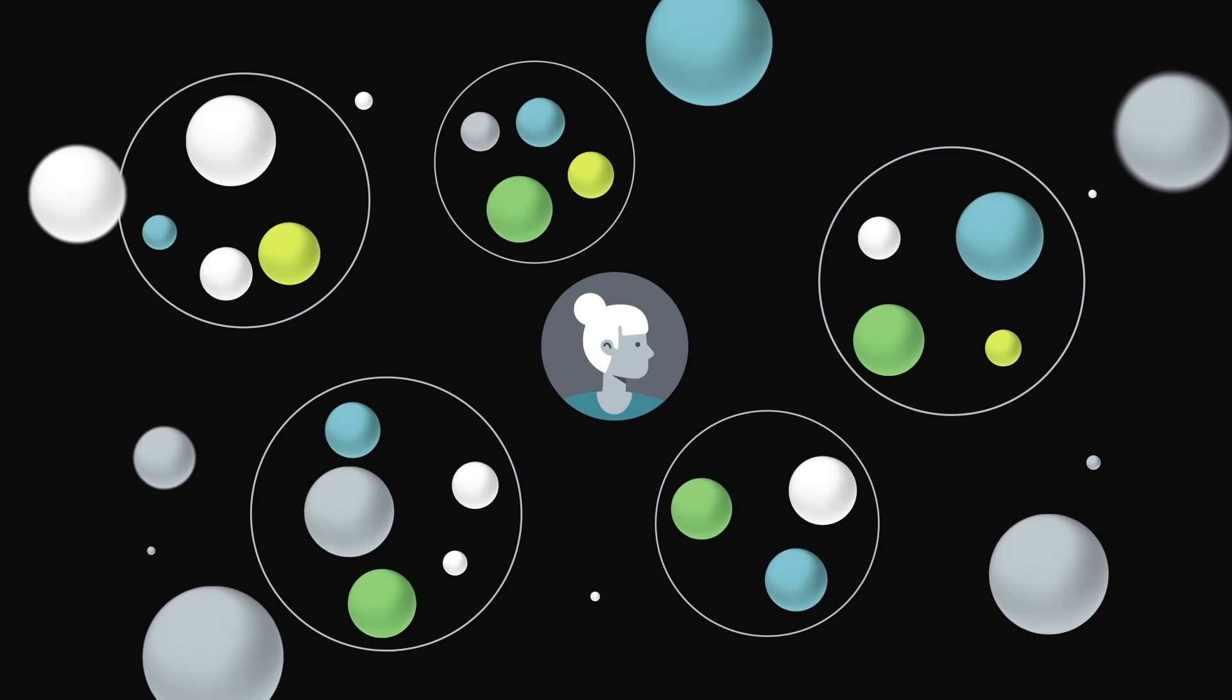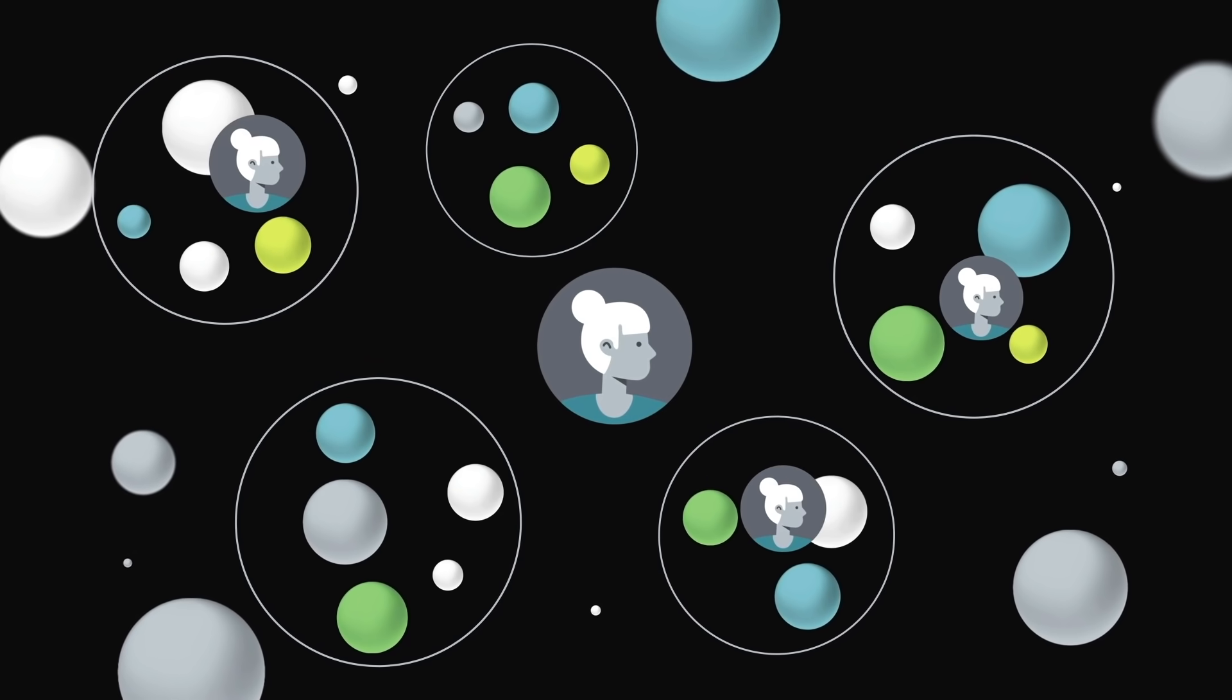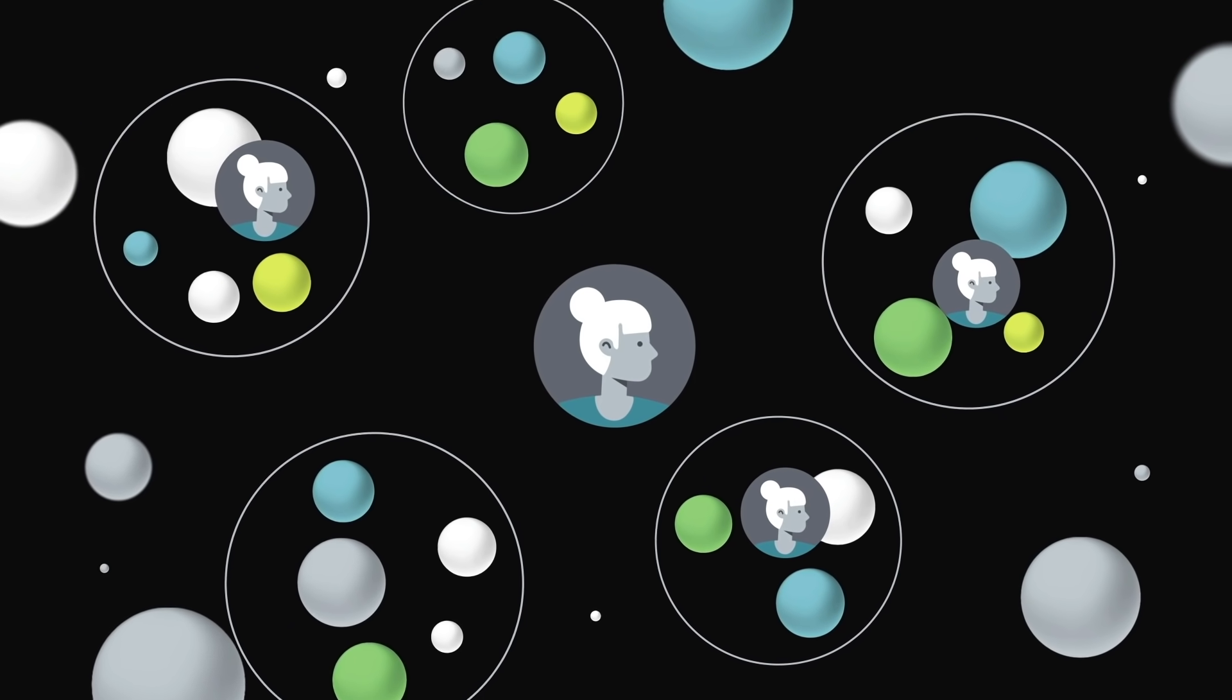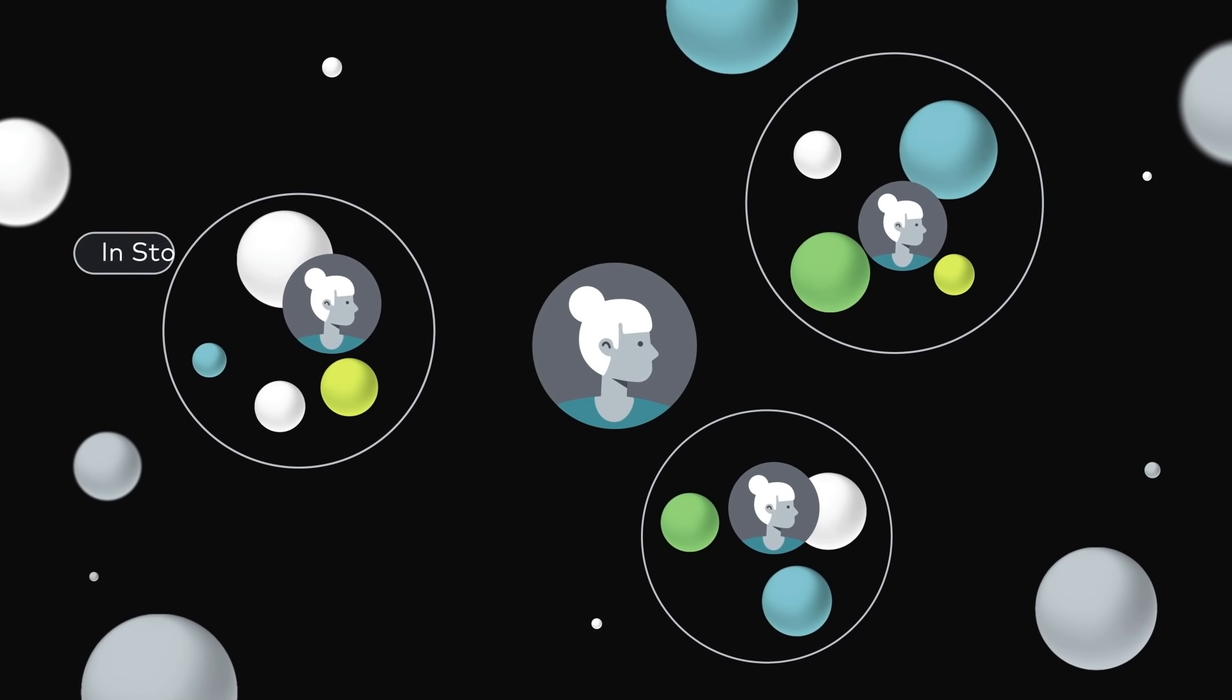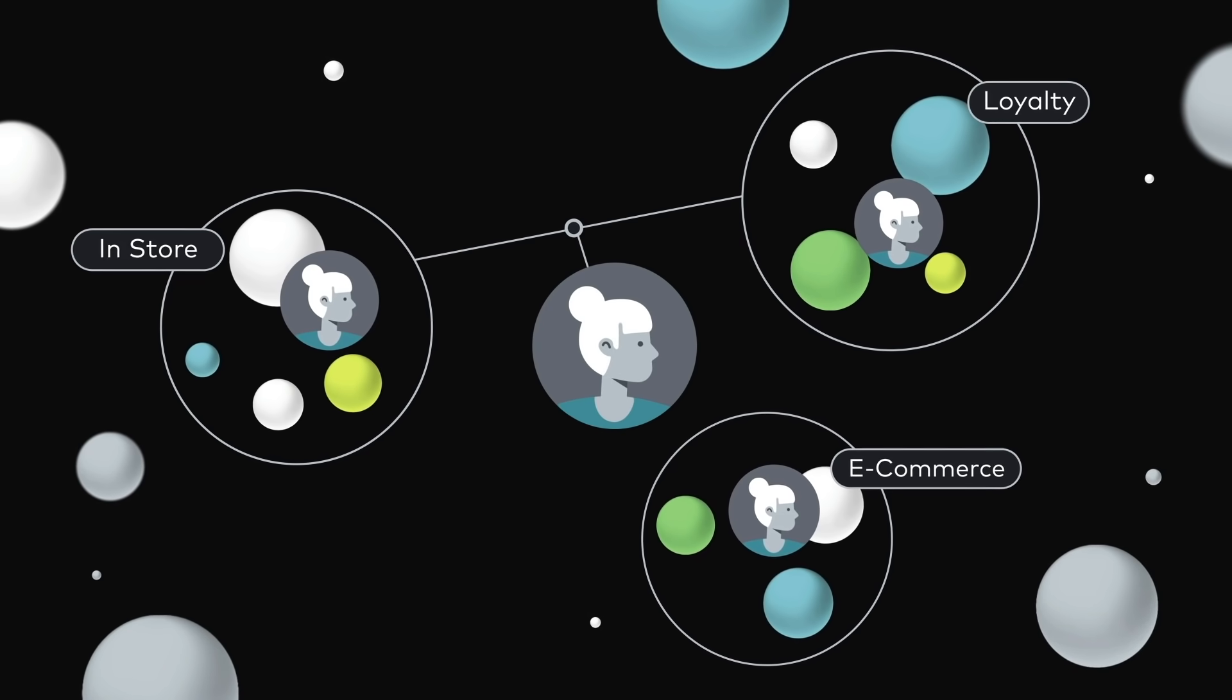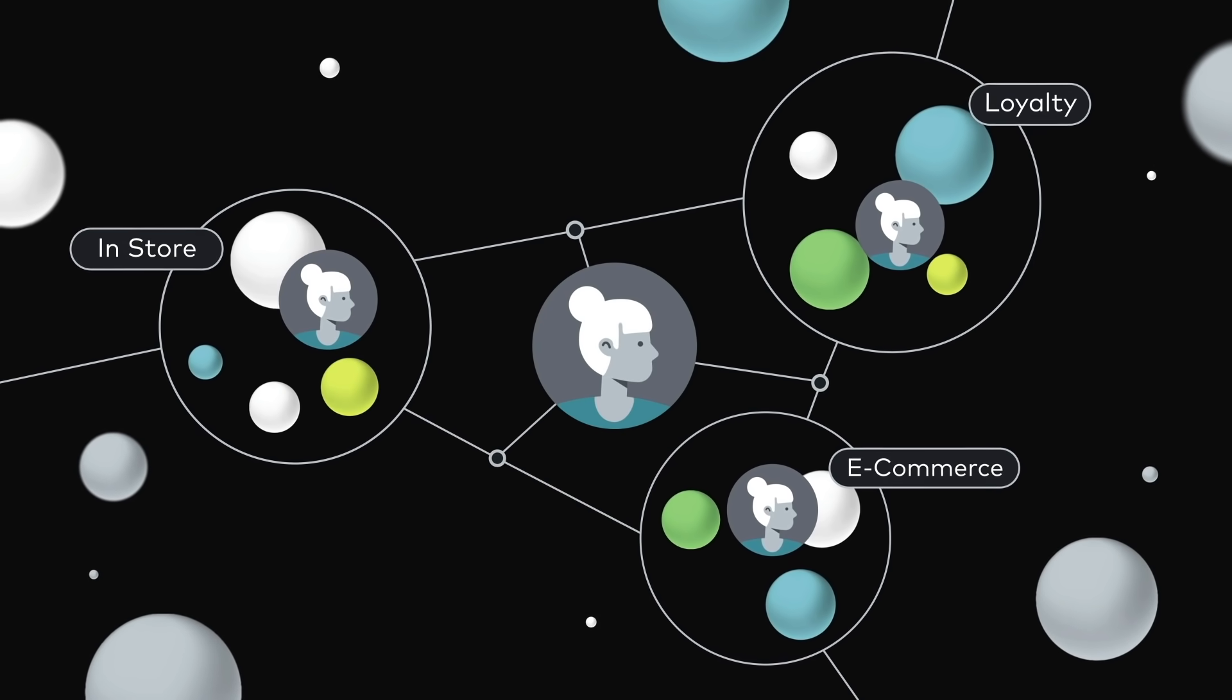There's so much data from so many different sources. Customer records end up scattered across systems that weren't designed to talk to each other. To create a single view of the customer, companies have been trying for decades to connect the dots across data sources by writing rules.